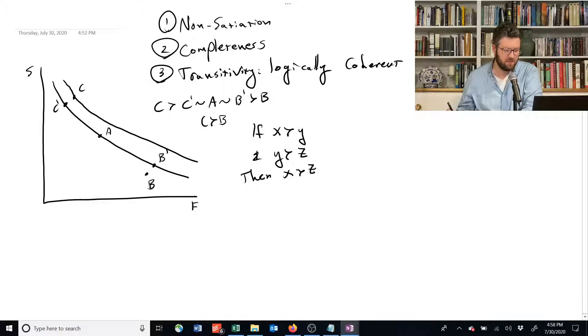And it would look something like this. Similarly, we could do the same thing for B, and it might look something like this. Now we can see that we've got a set of indifference curves.